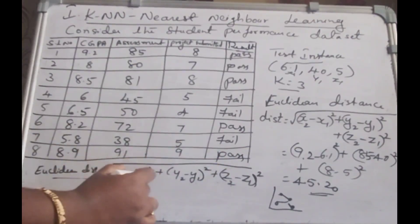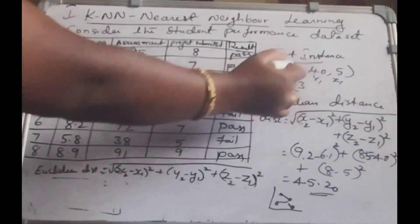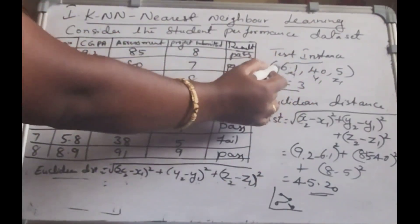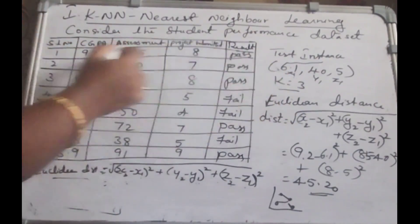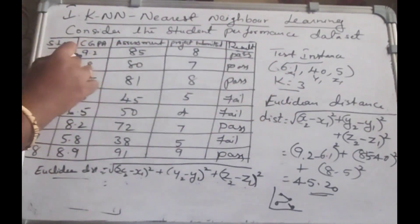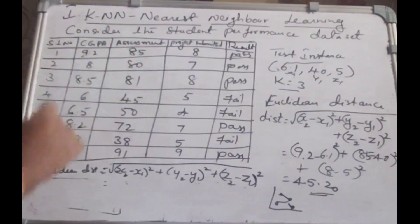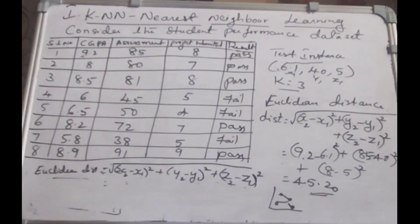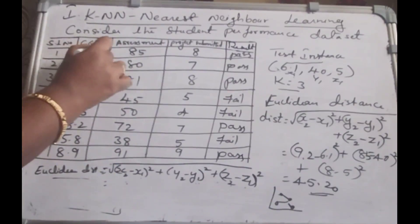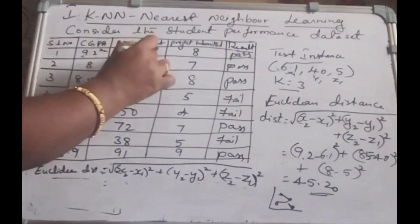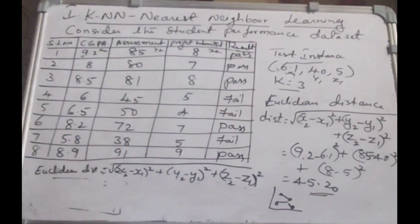So what are X1, Y1, Z1? X1, Y1, Z1 are our testing instance values. This is the difference from the testing instance to the training instance. How many samples have we trained here? 8 samples. So all the training values will be X2, Y2, and Z2.